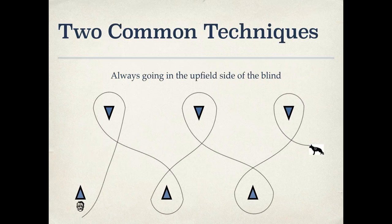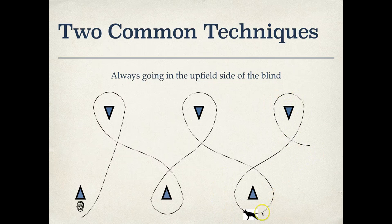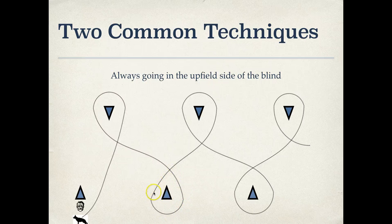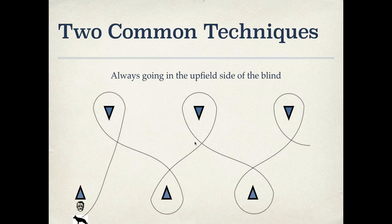The other technique is always going in the upfield side of the blind. So as the dog goes, always going in upfield. He's making like a figure eight type motion. This is a very good technique also. It kind of avoids this problem because it's much less temptation for the dog to skip. With going away from the helper, it's much less temptation for the dog.